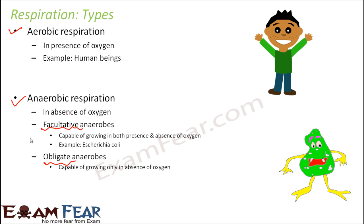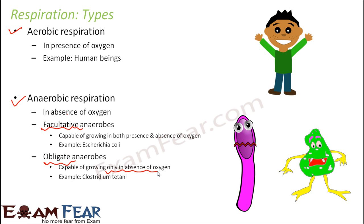Obligate anaerobes are capable of growing only in absence of oxygen. If kept in oxygen, they get killed by its concentration. An example is Clostridium, a bacteria known to cause the disease tetanus. In plants, both aerobic and anaerobic respiration can take place. Primarily we focus on aerobic respiration because a high amount of energy is released in aerobic respiration.